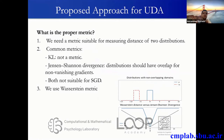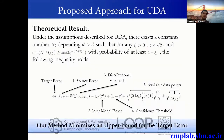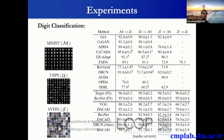We use Wasserstein distance because it has non-vanishing gradients when two distributions do not have overlapping support, which is quite useful in deep learning since we use first-order optimization methods that rely on gradient information. We also have a theoretical result on why solving this optimization problem is helpful. According to our theorem, the reason our model generalizes well is that the distributions are matched class-conditionally.